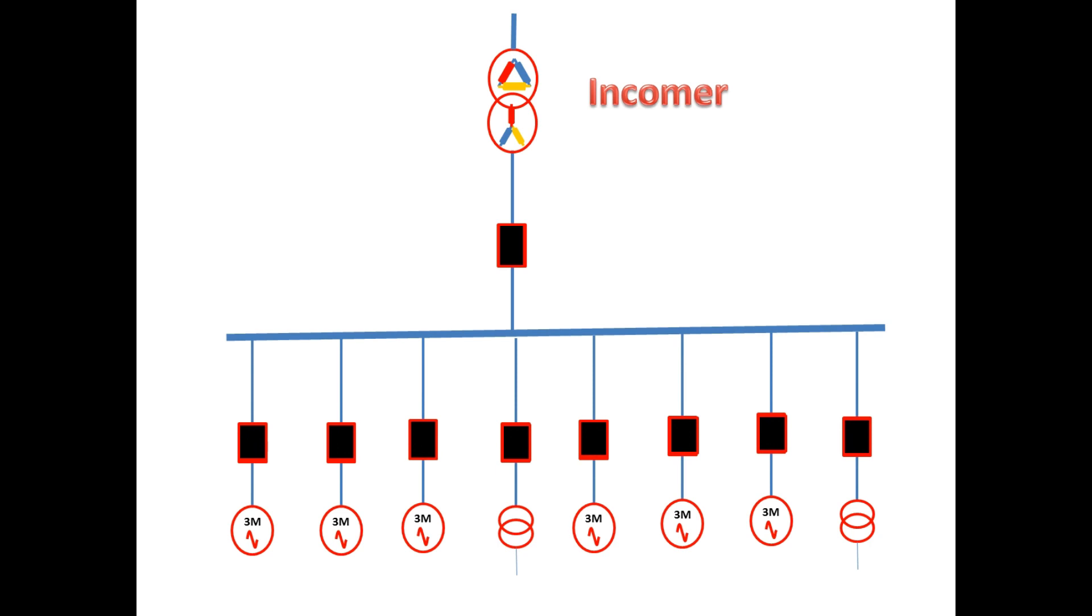Let us consider this is incomer, it connects with bus and bus has many outgoing feeders. All these outgoing feeders are load for incomer. Considering each taking 40A as its full load current for each feeder. So the incomer will take 320A as load current and also we are considering the incomer transformer full load current as 320A.